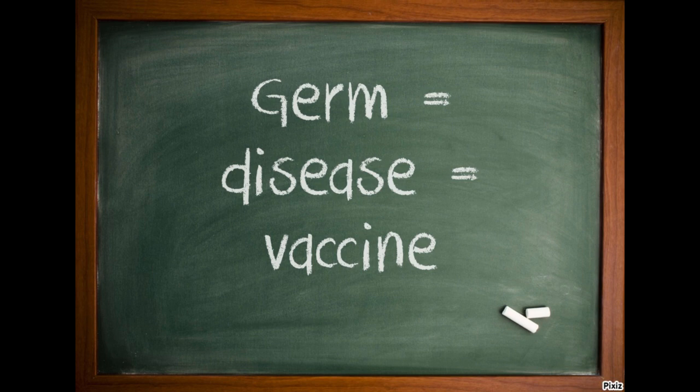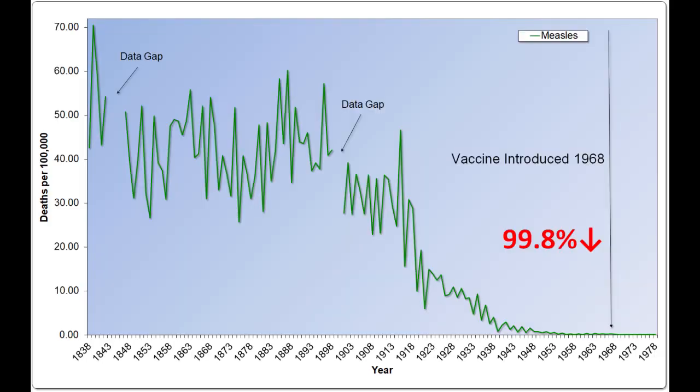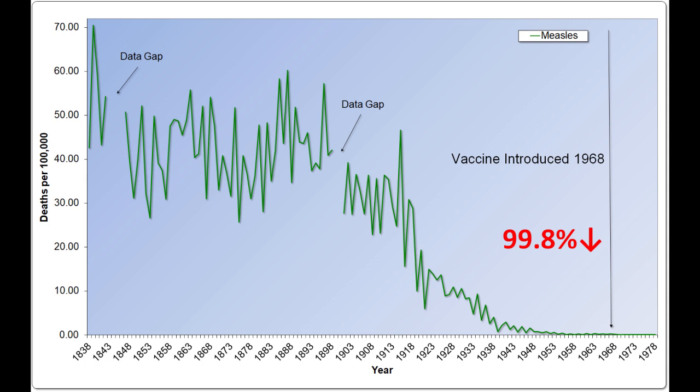But there is a problem with this single-germ-cause view of disease reality that can be seen in the historical data. For example, when we look at the United States mortality data for measles, the decline in deaths from measles fell by over 98% from the peak before vaccination programs began. The fall in deaths was even more dramatic in England at over 99%, almost 100% from the peak when their measles vaccination program began.